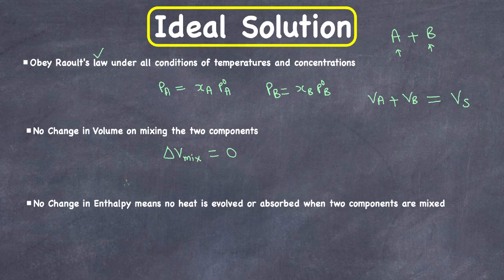In ideal solutions, there is no change in enthalpy, meaning no heat is evolved or absorbed when two components are mixed. This is represented by Delta H mix equals zero. This happens because there is no change in magnitude of the attractive forces between the two components, and I'm going to go over this concept on the next slide.